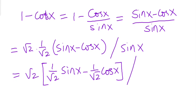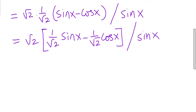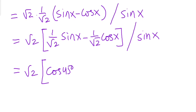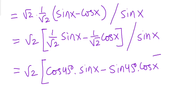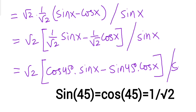Then, if you notice, both sin 45° and cos 45° equal 1/√2. So we can replace 1/√2 as cos 45°·sin x - sin 45°·cos x, all divided by sin x.